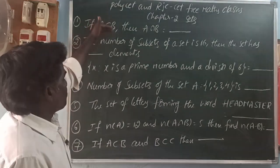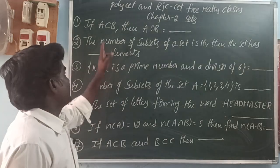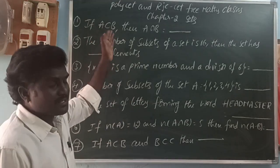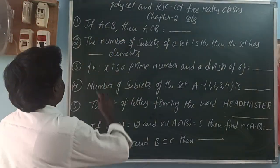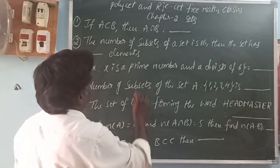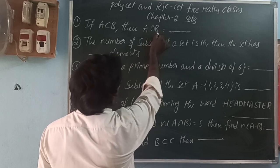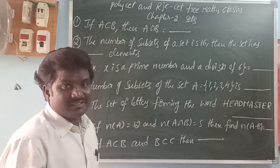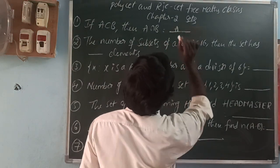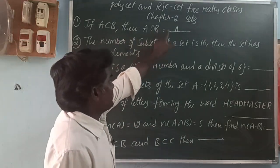First one: if A subset B, then A intersection B equals A. So, subset means the set of elements of A is in the set of elements of B, then A subset of B. That means all the elements of A are in the set of elements of B. Here, A intersection B means the common elements of A and B. So, what are the common elements? A. So, A subset B, then A intersection B is equal to A.